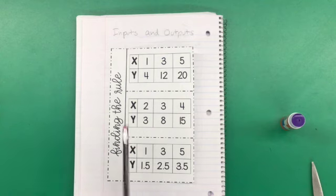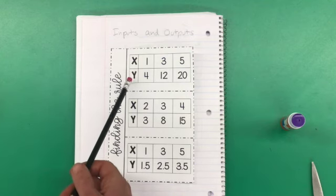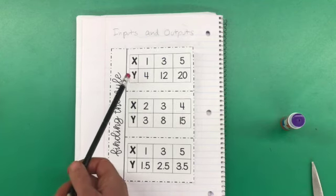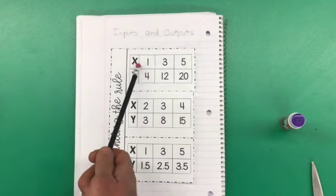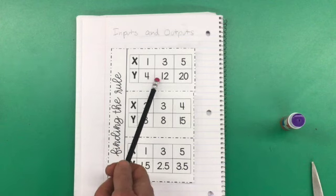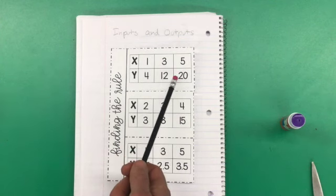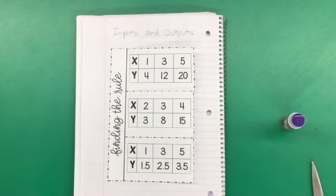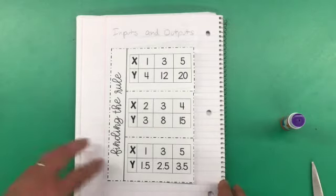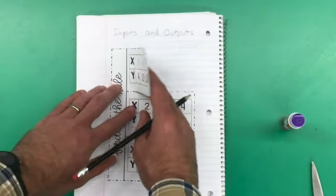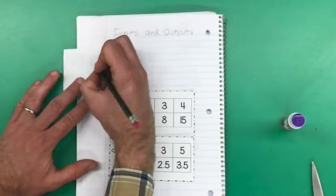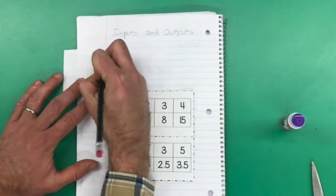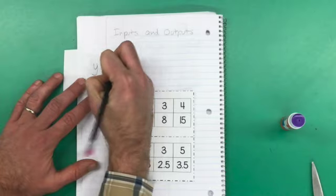Well, you may have discovered that the relationship is that every y value is 4 times the value of its corresponding x value. So 1 times 4 is 4, 3 times 4 is 12, and 5 times 4 is 20. So these are all equations. These are all function equations that could be represented by y equals 4x.